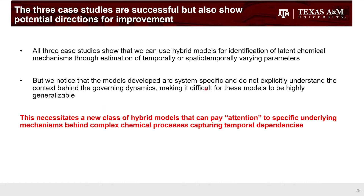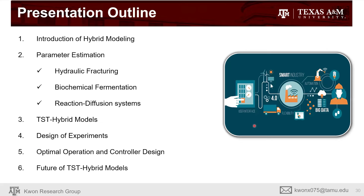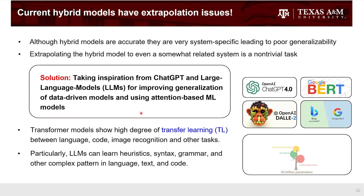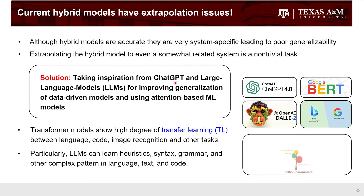All three case studies showed we can use hybrid models to identify latent chemical mechanisms through estimation of temporal or spatiotemporally varying parameters. However, we noticed the models are very system-specific and do not explicitly understand the context behind the governing dynamics, making them difficult to generalize. We are trying to take the hybrid model to the next generation by enabling it to pay attention to specific underlying mechanisms behind complex chemical processes — I quote 'attention' because I'll now discuss the famous paper 'Attention Is All You Need,' which has been the driver for ChatGPT and large language models.